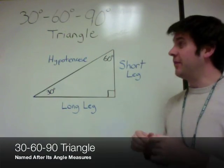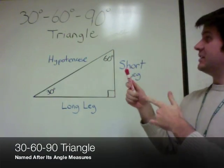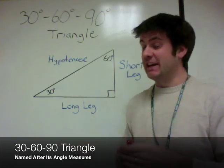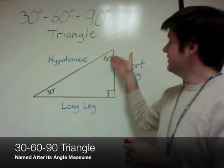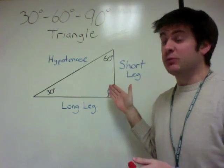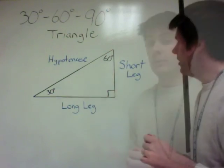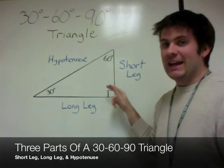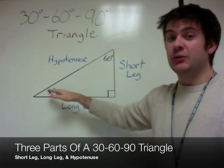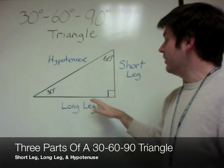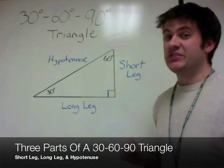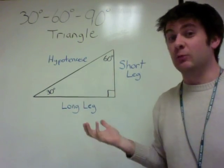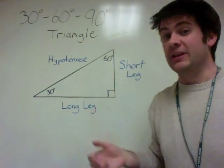Now we're looking at a 30-60-90 triangle. It gets its name from the measures of its angles: a 30-degree angle, a 60-degree angle, and a 90-degree angle. There are three parts: the short leg, which is always across from the 30-degree angle; the long leg, which is across from the 60-degree angle; and the hypotenuse, which is always across from the right angle.